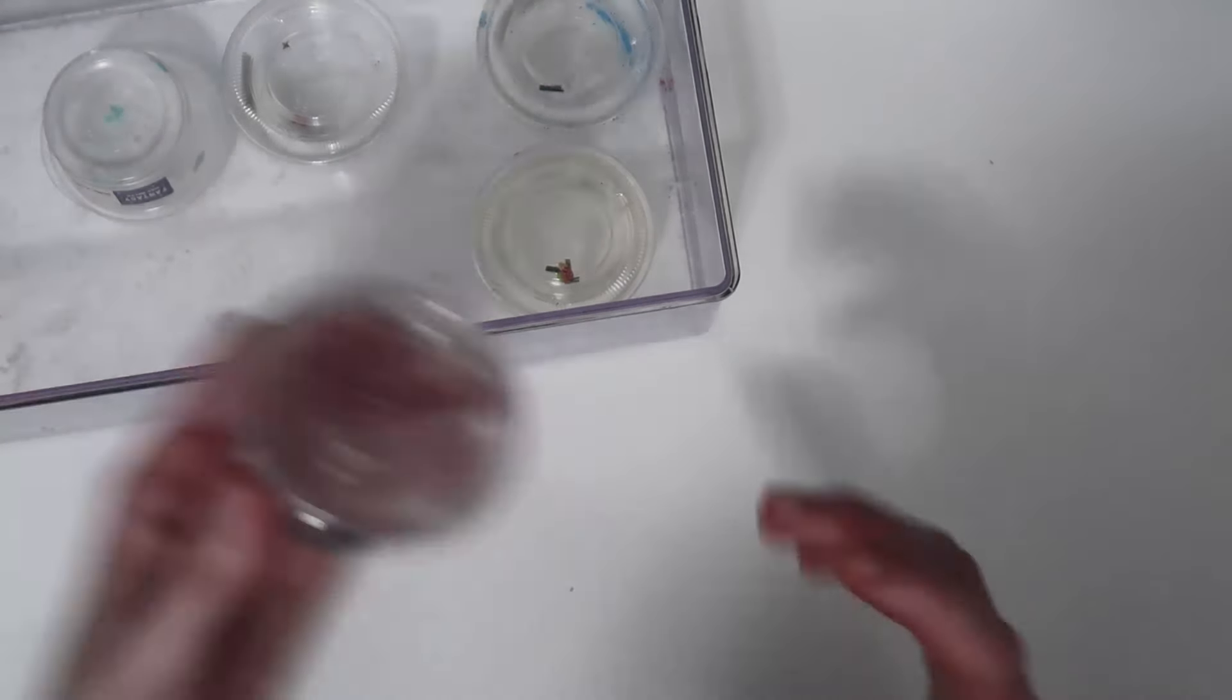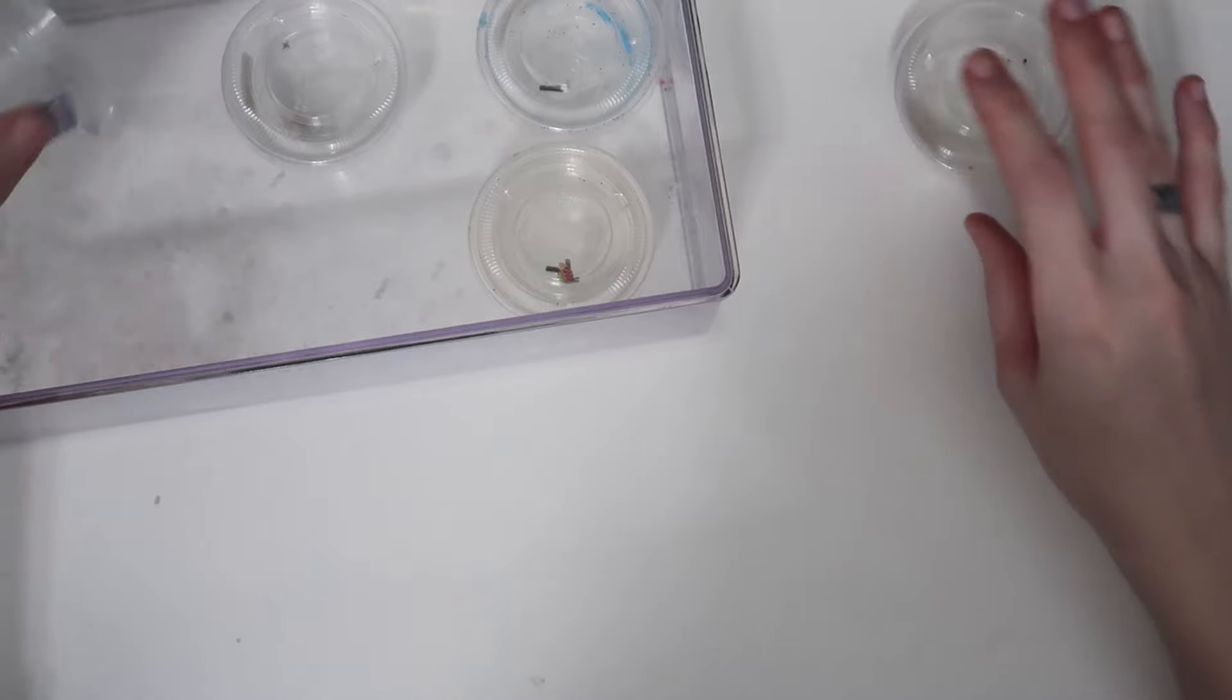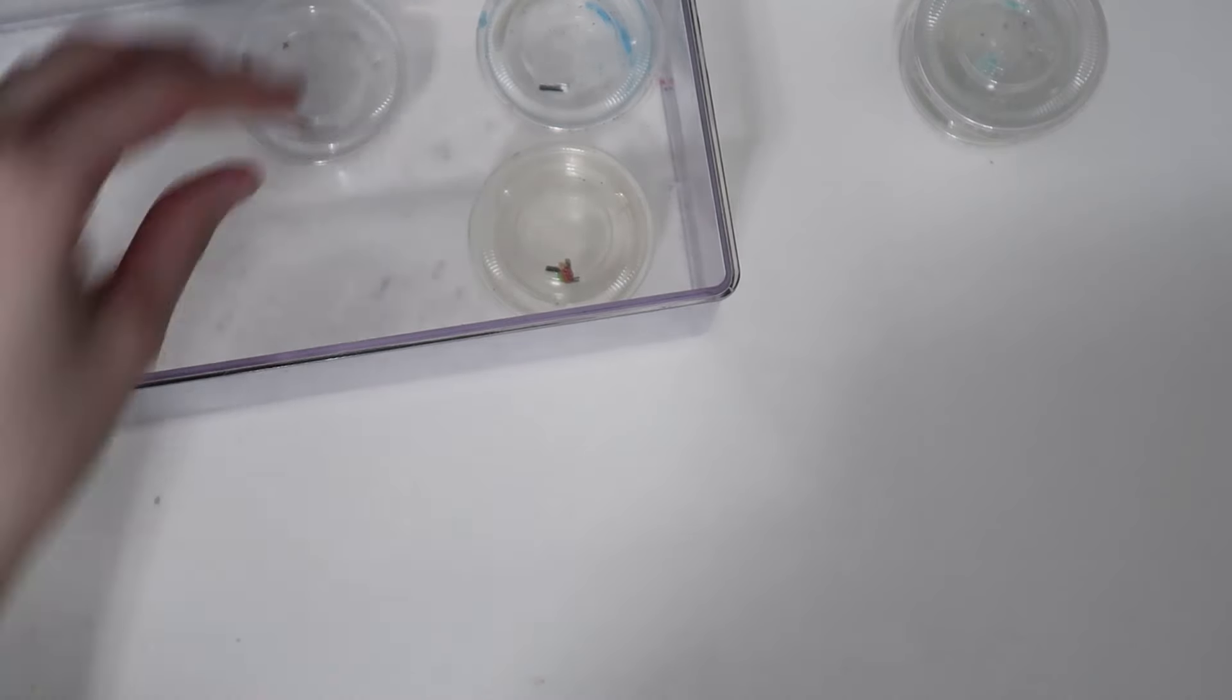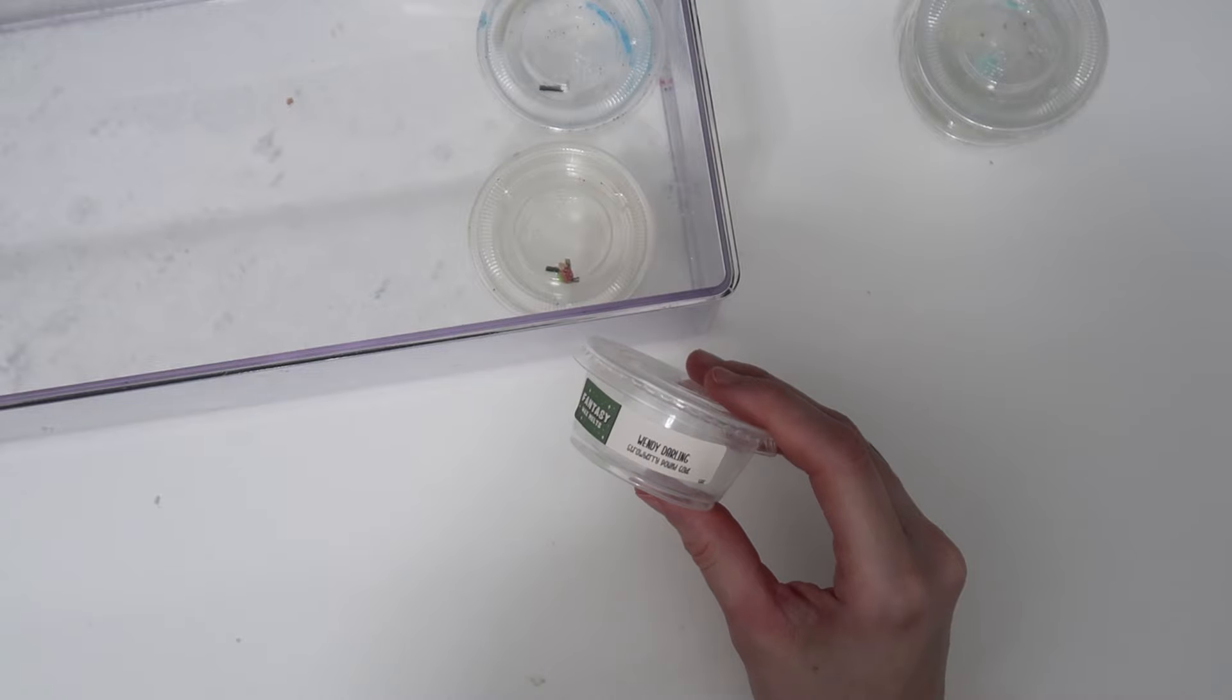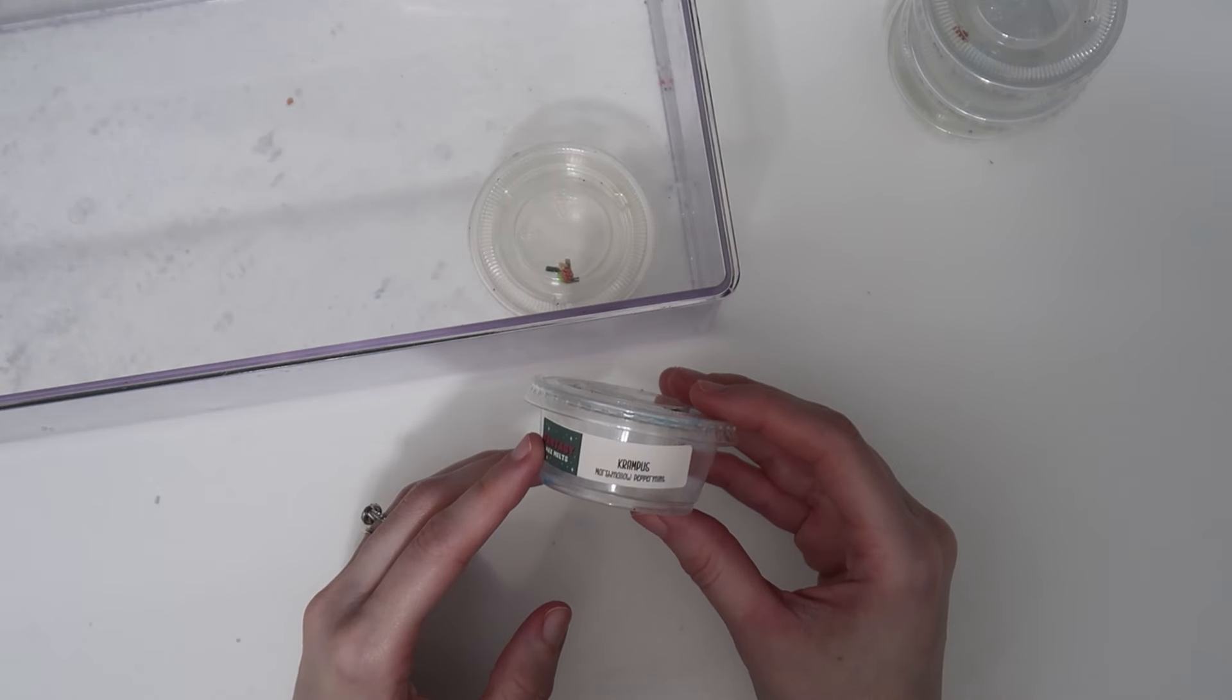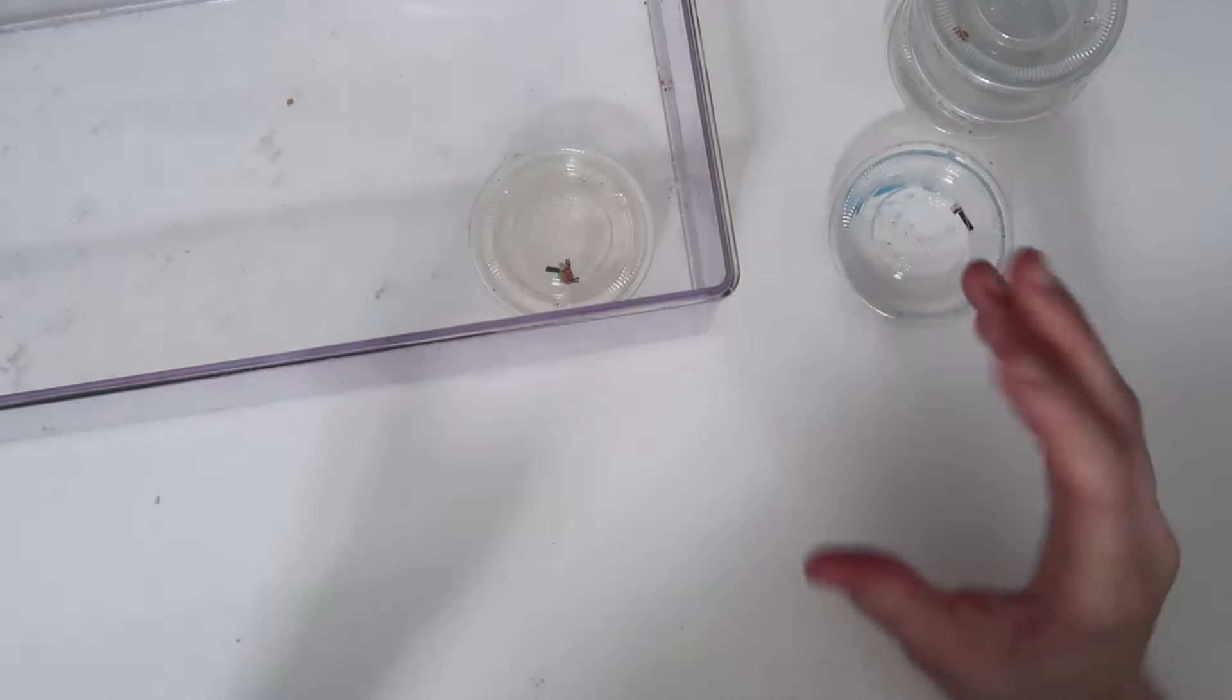From Fantasy Wax, first we have A Christmas Carol which was eggnog. This was super good. I like eggnog by itself, it's just so warm. Then we had Ariel - coconut water, sea lily, and lemon zest. This was another really fresh oceany smell. Love melting those in the bedroom. Wendy Darling - this was plain strawberry pound cake. I don't think I've ever melted just plain strawberry pound cake and that was amazing.